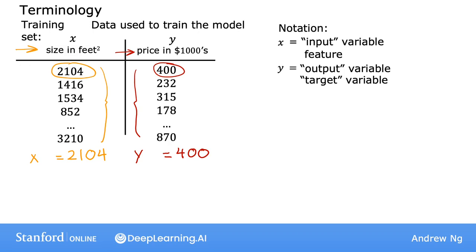So the dataset has one row for each house. And in this particular training set, there are 47 rows with each row representing a different training example. We're going to use lowercase m to refer to the total number of training examples. And so here, m is equal to 47.